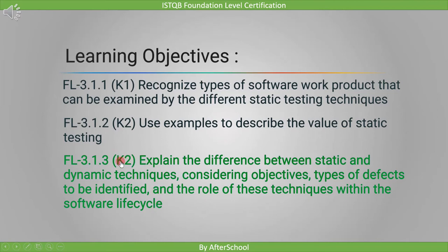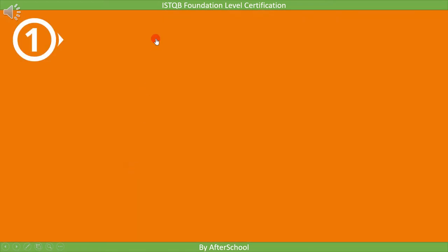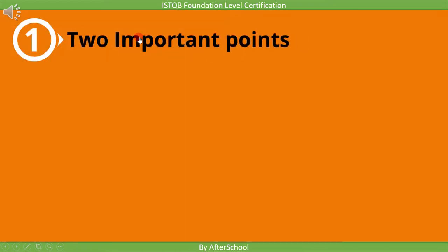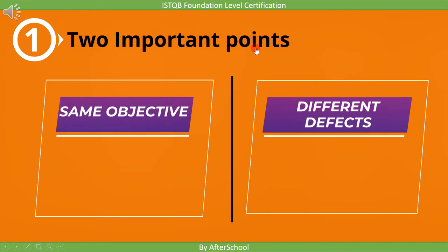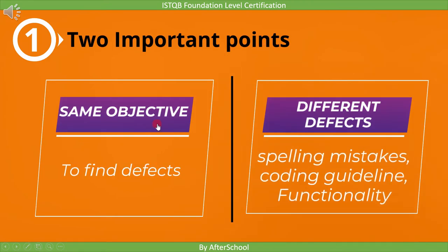This is a very important topic and it is marked as K2. When we talk about static testing and dynamic testing, there are two important points to know. The first point is that static testing and dynamic testing have the same objective — that is, finding defects. Whatever type of testing you perform, the main objective is to find defects.